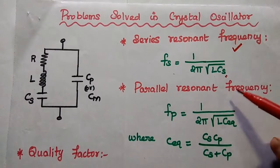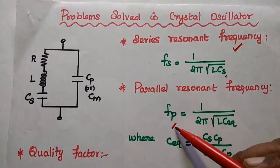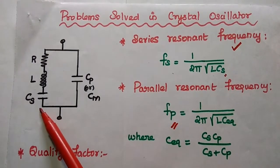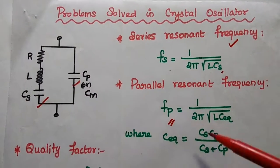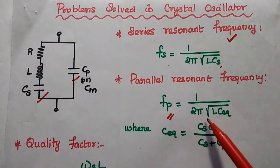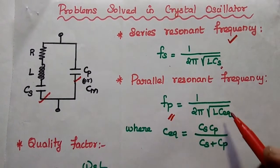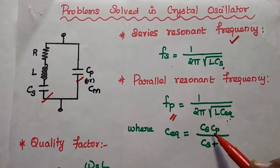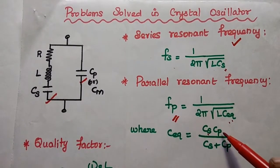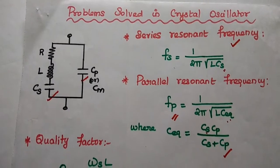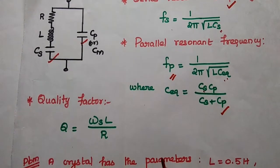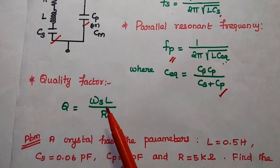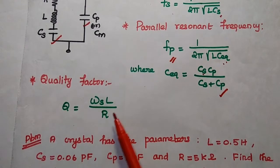Next, the parallel resonant frequency, denoted as Fp. The parallel resonant frequency involves the combination of Cs and Cp, so we can write: 1 by 2π times the square root of L into C_equivalent, where C_equivalent is the parallel combination of series capacitance and parallel capacitance. The quality factor for this crystal oscillator is given as Q equals ωs·L divided by R.